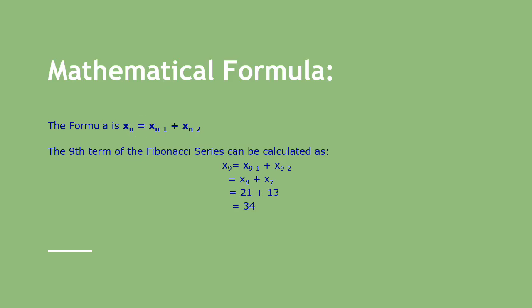The sequence xn of the Fibonacci numbers is defined by the recurrence relation. The formula is xn = xn-1 + xn-2. For example, the 9th term is calculated like this: x9 = x9-1 + x9-2, which is x8 + x7. x8 is 21 and x7 is 13, so when you add 21 + 13 you get x9, which is 34.